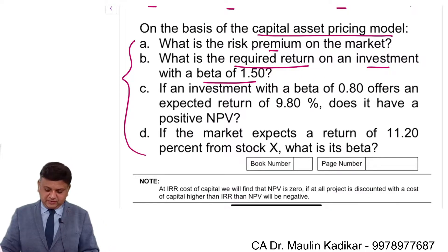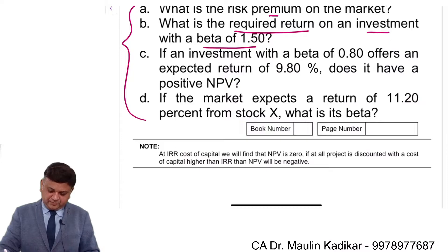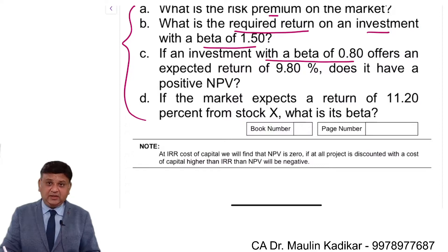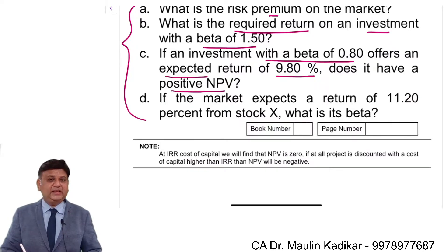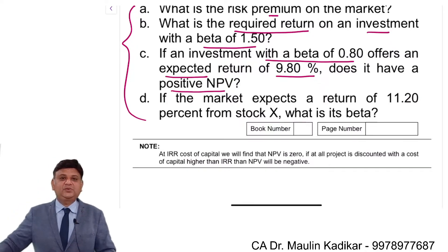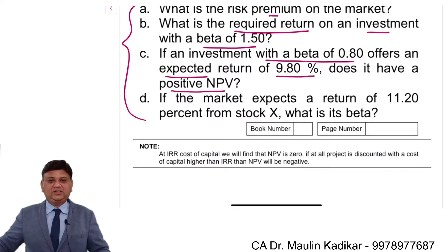Part C of the question: if an investment with a beta of 0.8 offers an expected return of 9.8%, does it have positive NPV? Please give your answer for this question in the chat box.